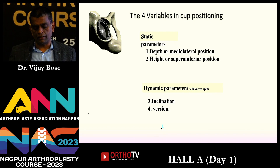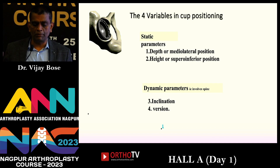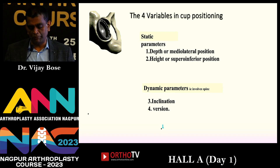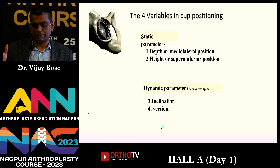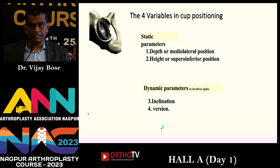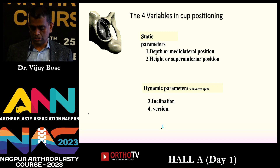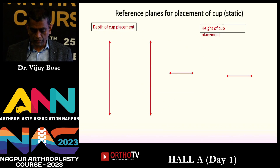There are four variables in your hands when doing cup positioning in a given patient. Two are static: the depth or medial position, which you want to leave at the true floor for everyone, and the height or superior position. Today we are more interested in the dynamic parameters — inclination and version — which is what I will talk about.